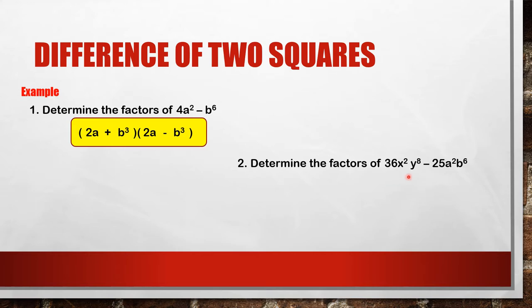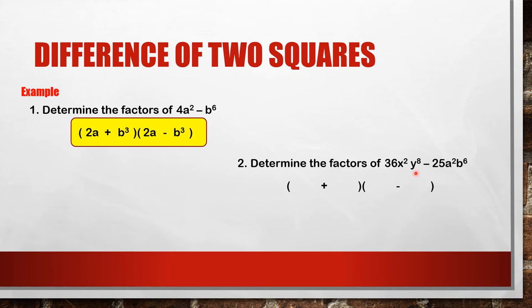Another example: 36x squared y to the 8th minus 25a squared b to the power of 6. This expression is a difference of two squares. The square root of 36 is 6, the square root of x squared is x, and the square root of y to the power of 8 is y to the fourth. Therefore, our first term is 6xy to the power of 4.